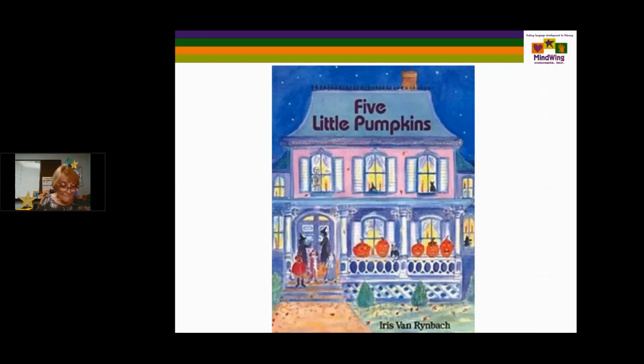Five Little Pumpkins is a very simple series of actions. It's for autumn, features rhyme, and the pumpkins are all seated on a gate and then each one, in order, does something. It is a finger rhyme — just a very simple series of actions done by a series of pumpkins.